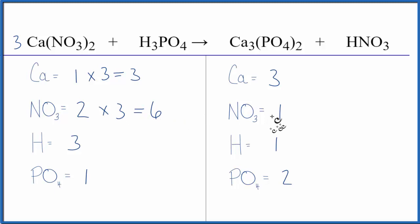Why don't we balance the nitrates next? We have six here and one here. Let's put a six in front of the HNO3. One nitrate times the six. That'll give us six nitrates and those are balanced. And then one hydrogen times the six. So now we have six hydrogens.